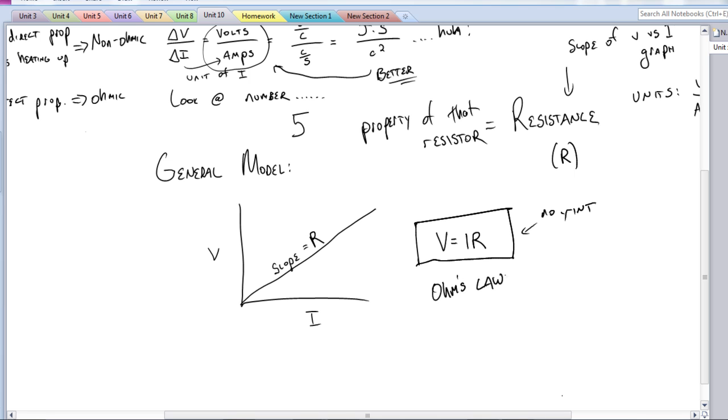Again, I don't really care about the names. I care more about where these things come from. And this is coming from a V versus I graph with the slope of being resistance.